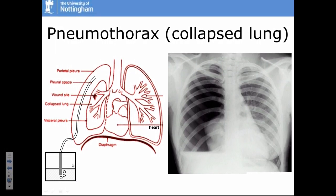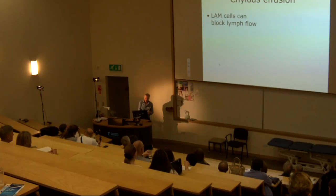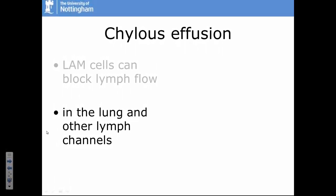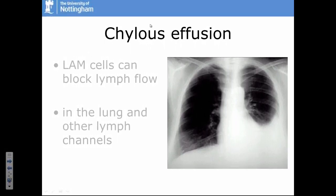The other complication in the chest is that LAM cells can block the lymphatics — the little channels that run next to blood vessels, absorbing fluid from your tissue. When you have a fatty meal, the fat is absorbed into lymphatics rather than blood. This lymphatic fluid can flow through the lymphatic channels and these can get blocked by LAM, happening in the lung or in the abdomen or pelvis. The lymphatic fluid can build up around the lung, squashing it — this is a chylous effusion, and it occurs in about 20% of women with LAM.